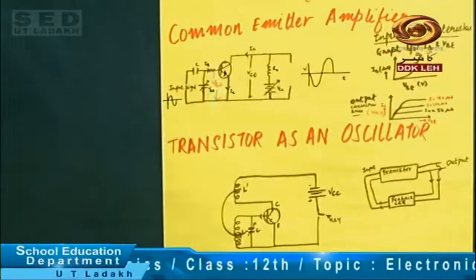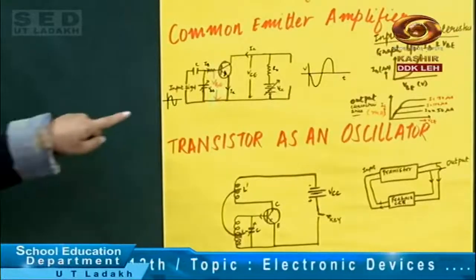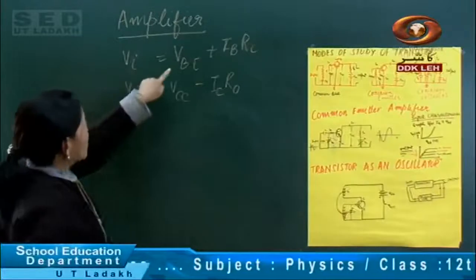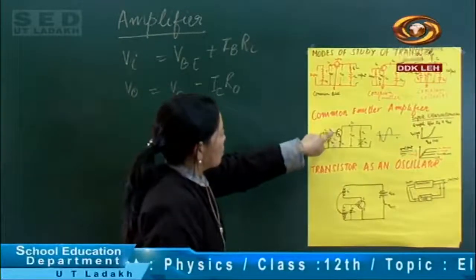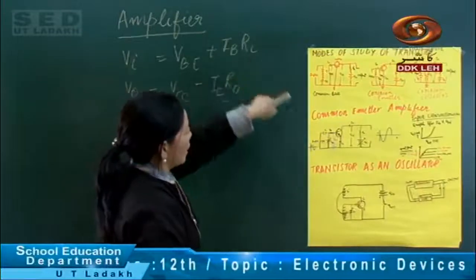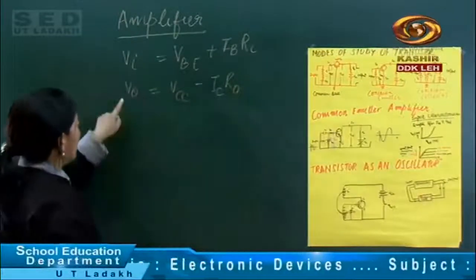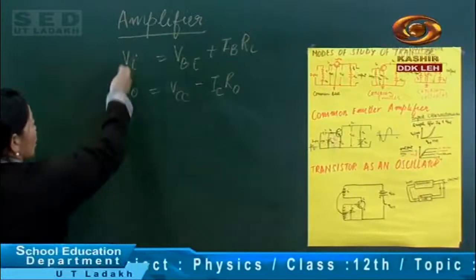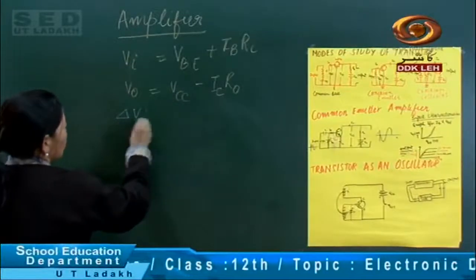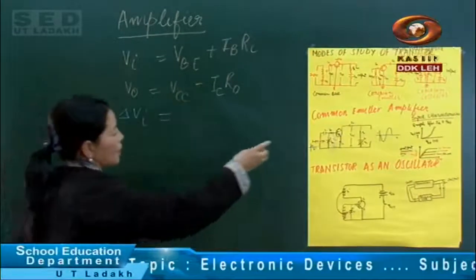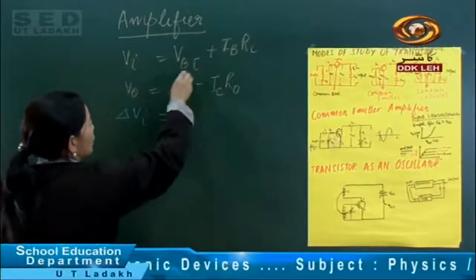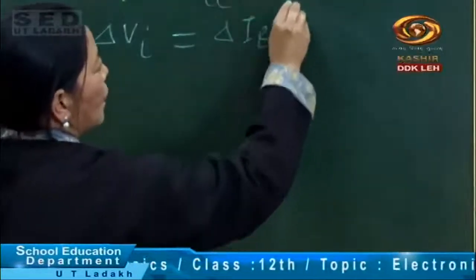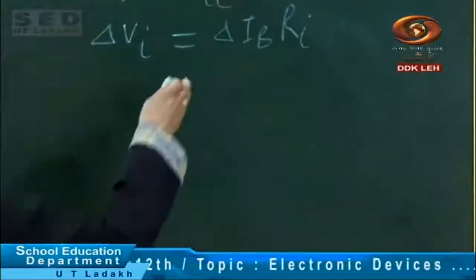Today we will see the voltage gain — how much gain is coming. The change in input voltage: the change in VBE may be taken as zero because it is very small, so it equals zero. And the change in current delta IB into RI, because RI is the input resistance which does not change.